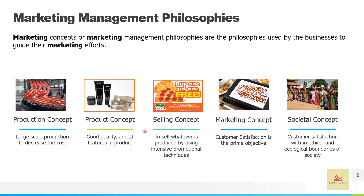Next is selling concept. Here quality doesn't matter and quantity doesn't matter — what matters is extensive promotional techniques. When we go to certain markets or malls we see lucrative offers like buy two get three, or buy one get one. These offers are so attractive that even if we don't want to buy, we feel like going and checking them out, and there is a possibility of conversion. These marketers attract people using intensive promotional techniques, making the sale so interesting that people feel the urge to buy.